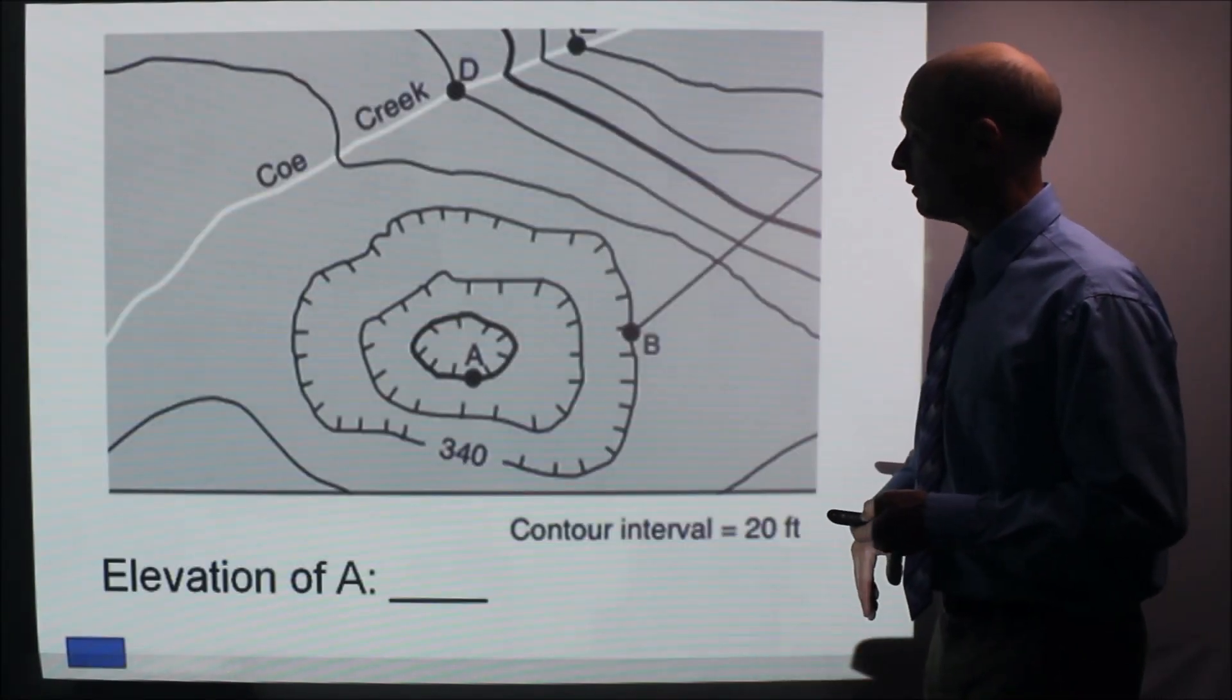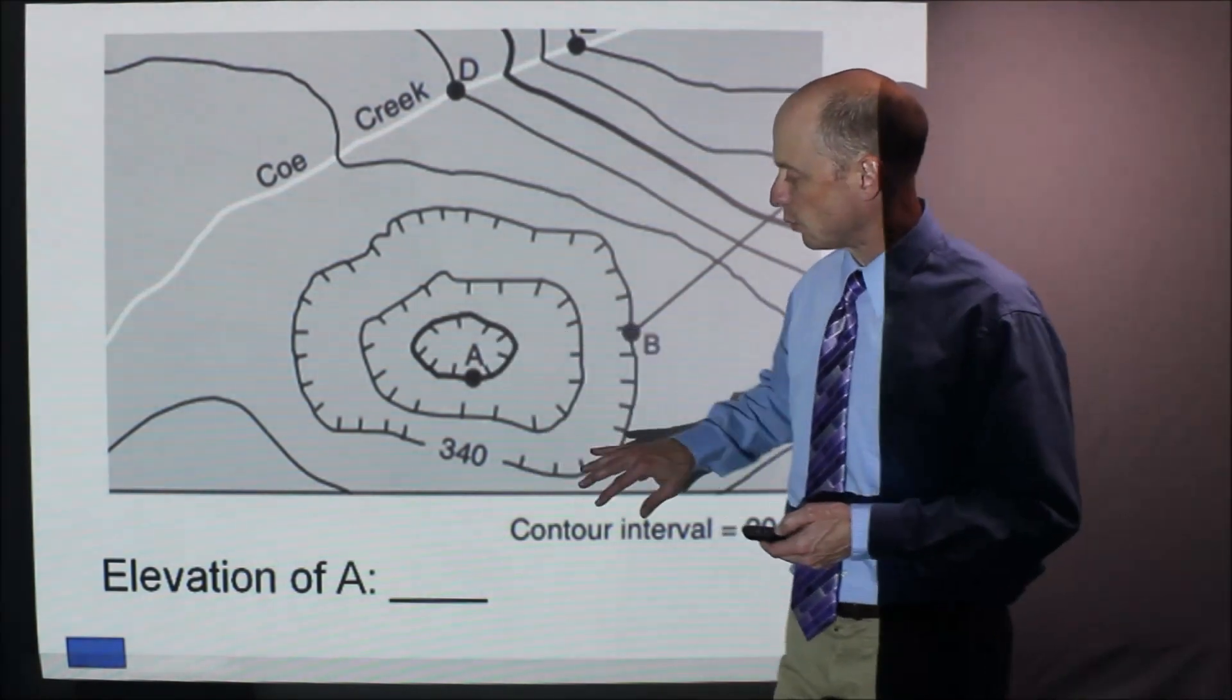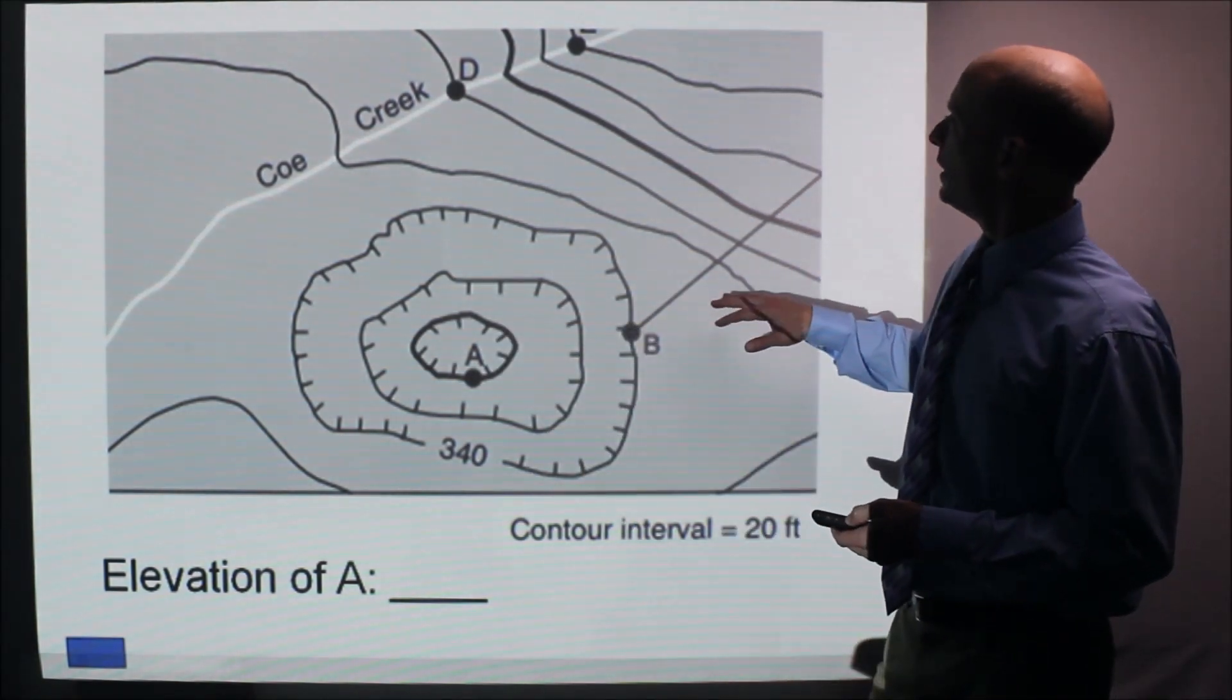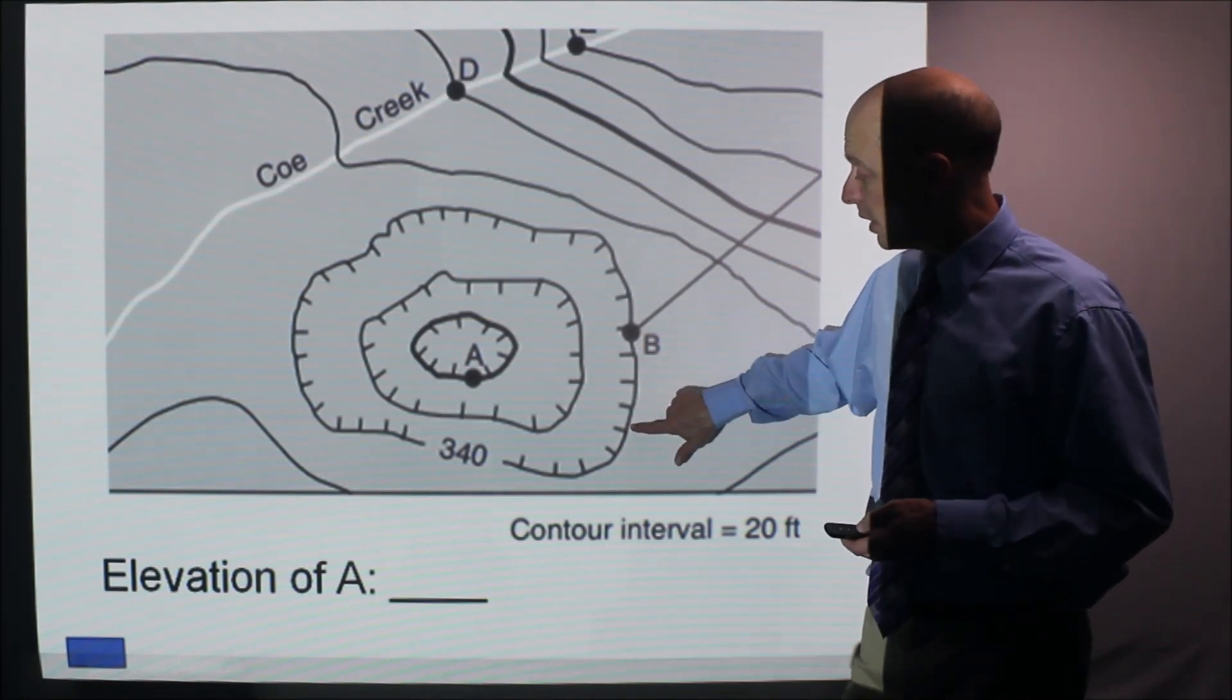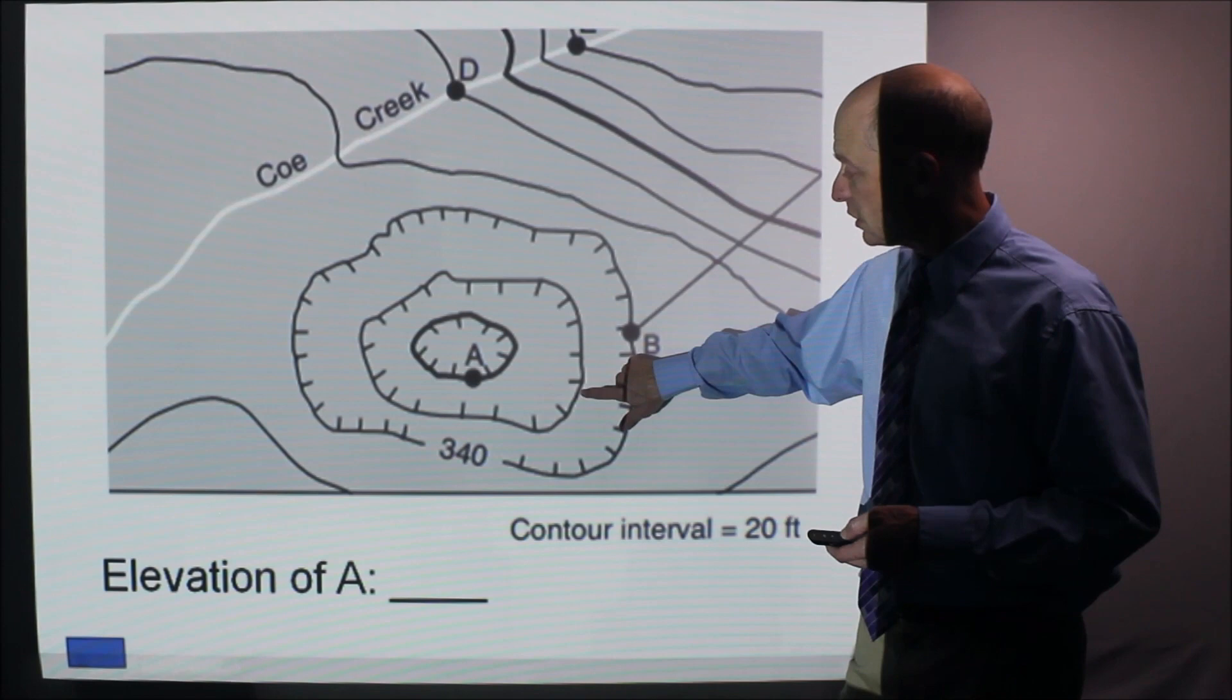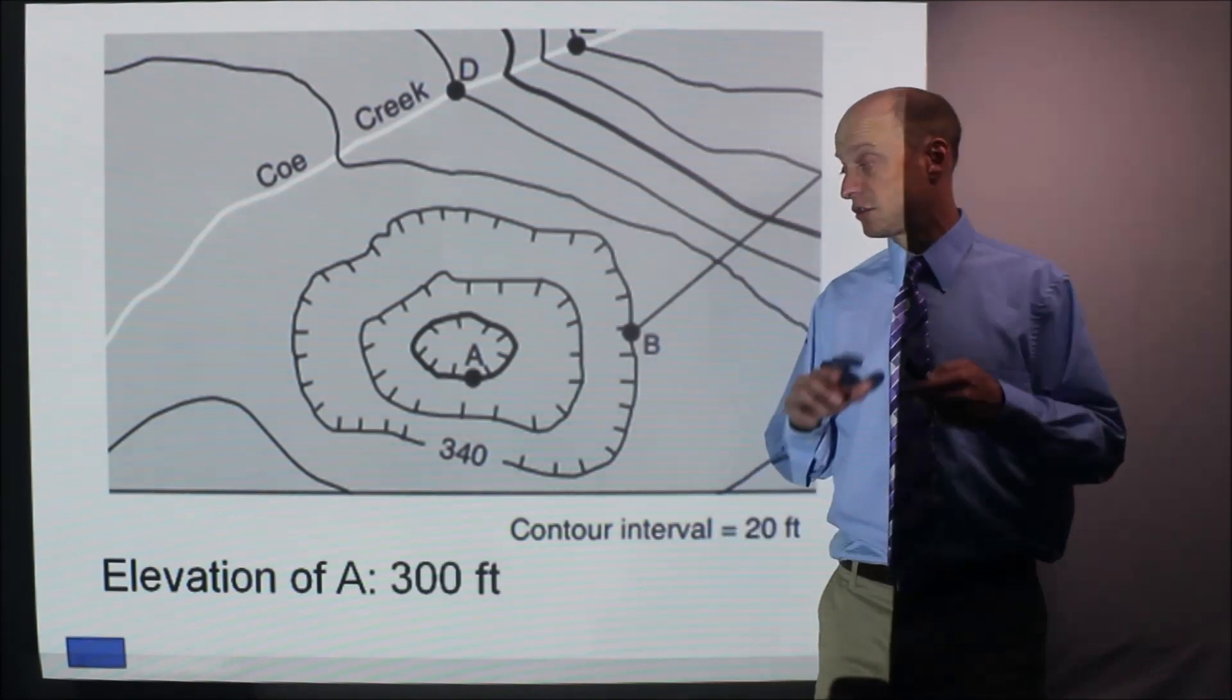Here's a question that relates to it. So it tells you contour interval is 20 feet and these are some depression contours. What is the elevation of A? Well this is 340 and it goes by 20 but I'm going downhill so this is 340 that's 320 that's going to be 300. So the elevation of A is 300 feet.